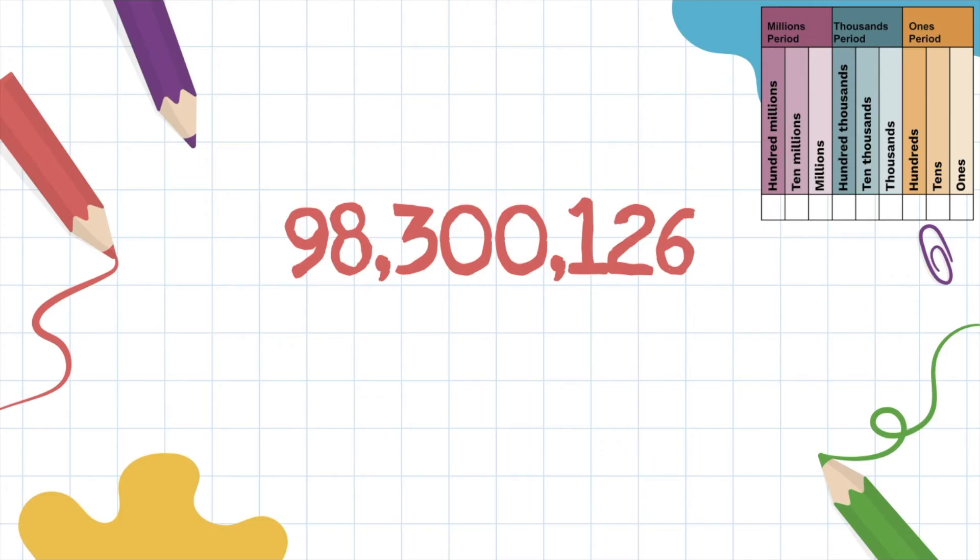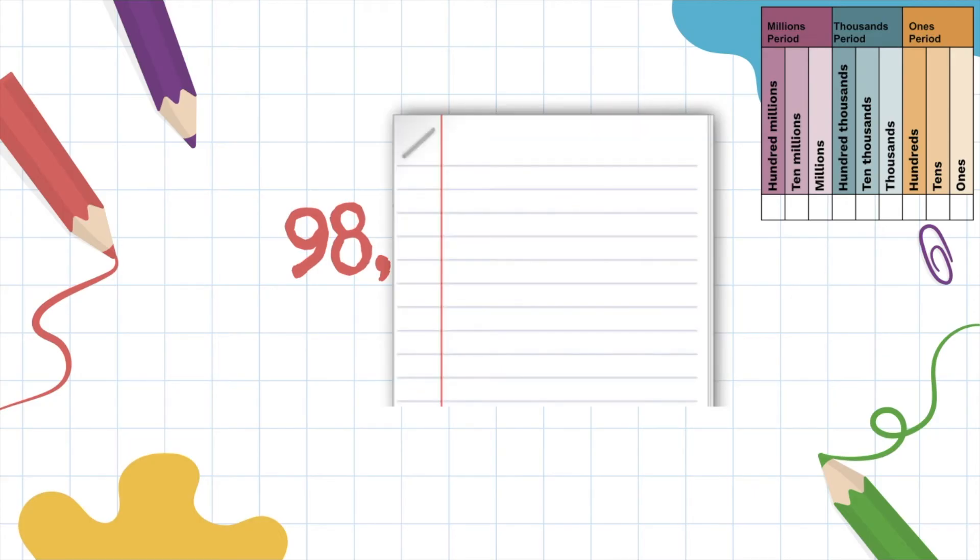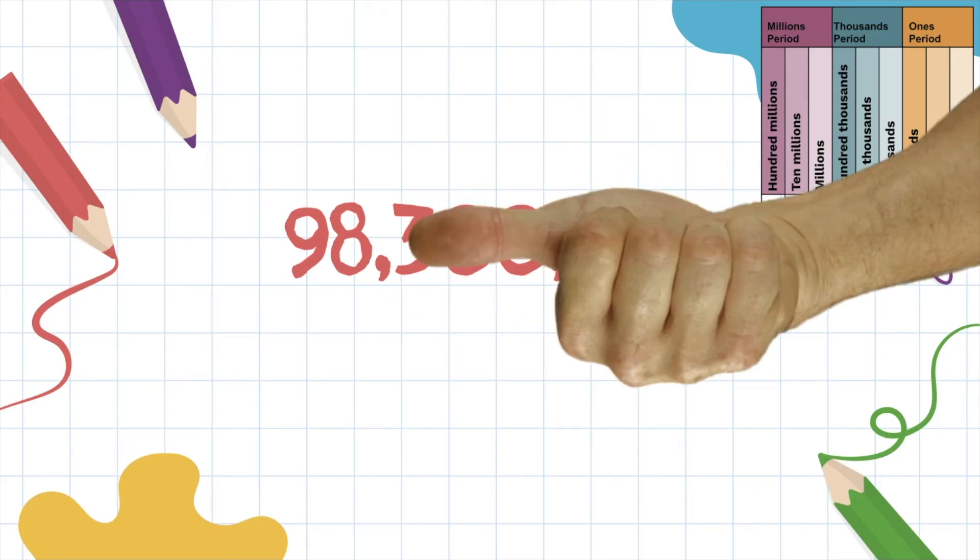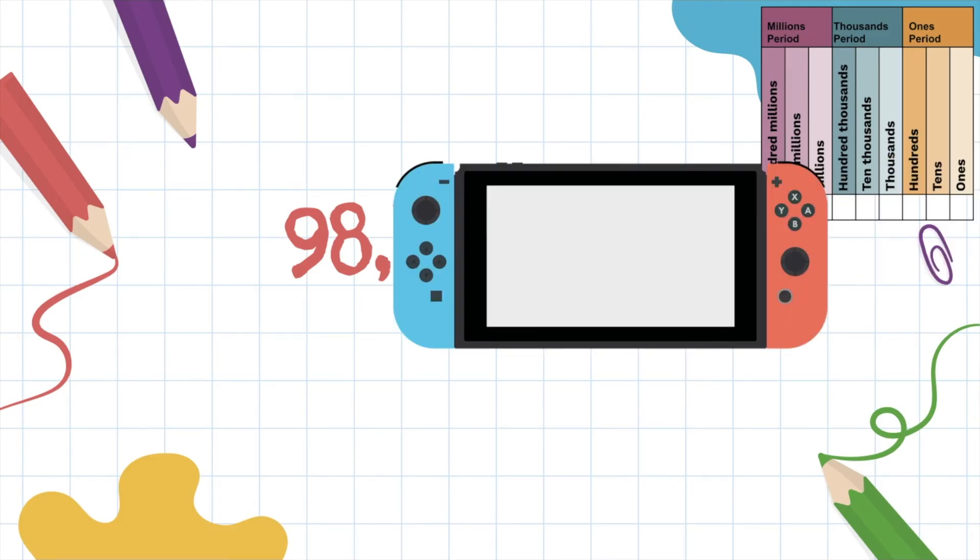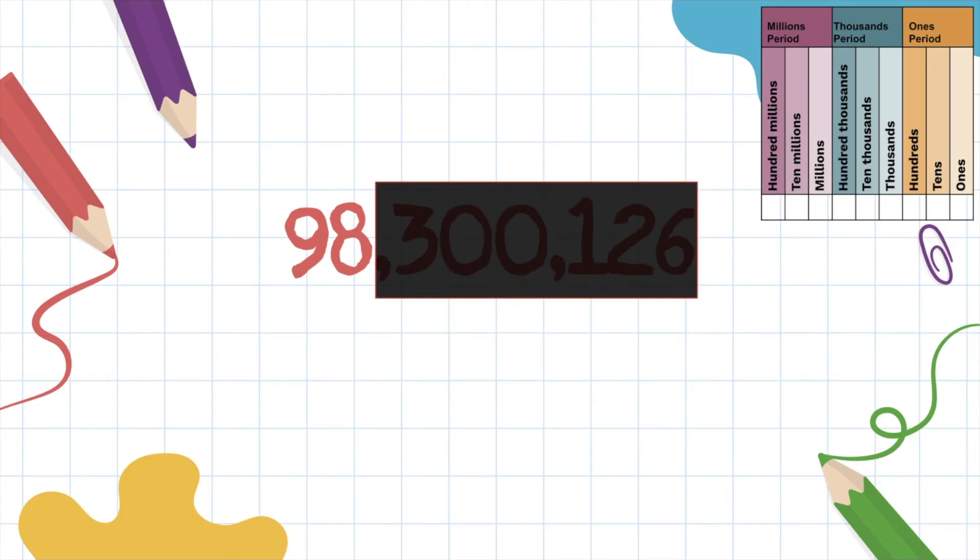Now we can go ahead and start reading our number, but we're going to focus on one period at a time. So I highly recommend that you use something to cover up the number so we can hide the digits that we're not looking at. It doesn't really matter what you use. Just use something. You can use paper, your hand, or maybe just use your favorite book. Use your Nintendo switch. Ladies and gentlemen, it does not matter what you use. Just use something to block out the number so you're focused on one period at a time.